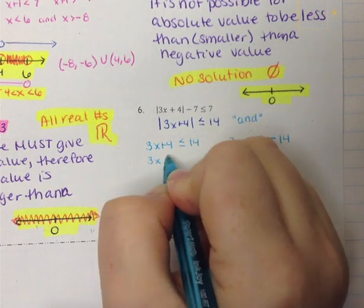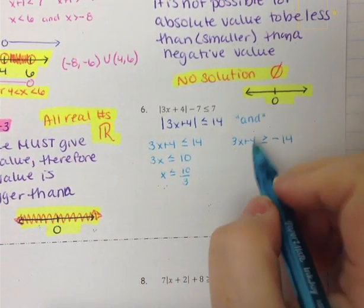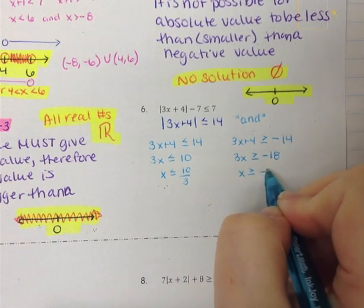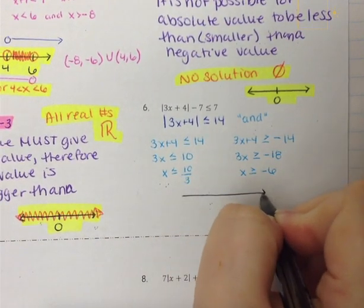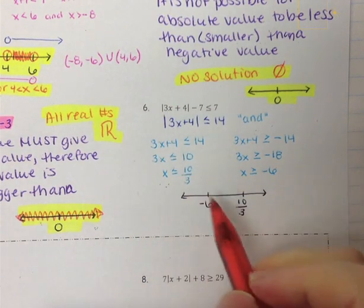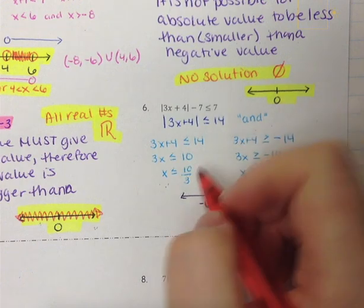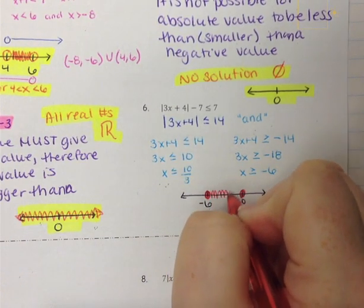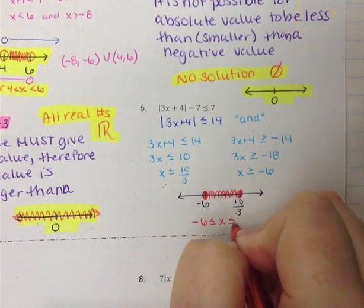Solving the first: subtract 4 to get 3x is less than or equal to 10, then divide by 3 to get x is less than or equal to 10 over 3. On the other: subtract 4 to get 3x is greater than or equal to negative 18, then divide by 3 to get x is greater than or equal to negative 6. On the number line we have negative 6 and positive 10 over 3. Since this is an and problem it shades in between, closed on negative 6 and closed on 10 over 3. The answer is negative 6 is less than or equal to x which is less than or equal to 10 over 3.